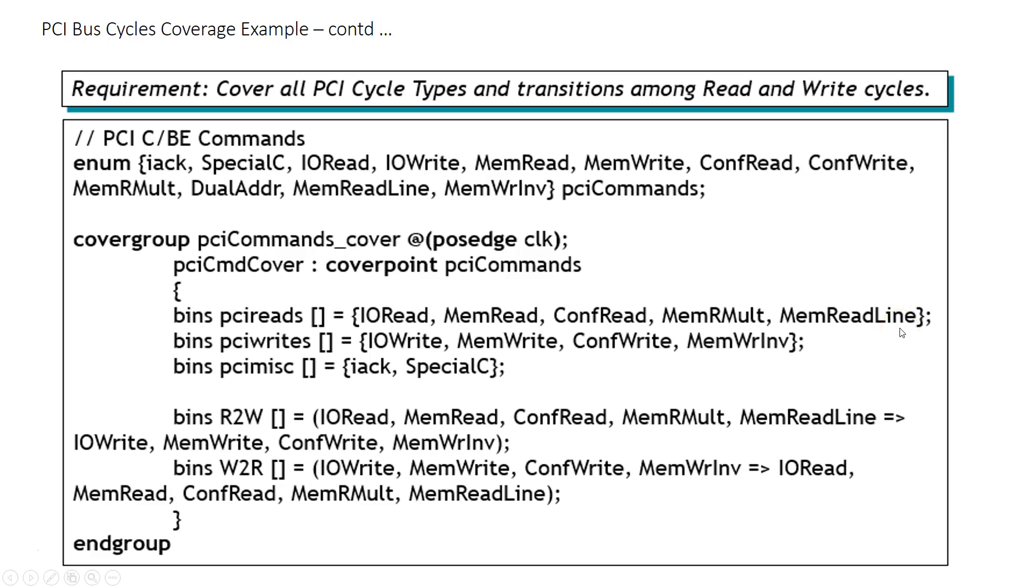Okay let's go back to our PCI commands example that I have been carrying forward among different features. Again there is the enum for the PCI commands. There are 12 different types of PCI commands. And in the cover group what we have done earlier is we created bins for PCI reads, bins for PCI writes and bins for PCI miscellaneous. What that means is in these bins create as many bins as required and cover IORead, MemRead, ConfRead, MemReadMultiple and MemReadLine. So basically make sure that when all the read commands of PCI have been exercised, all these bins should be considered covered.